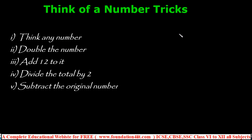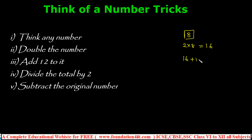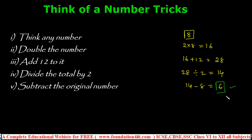Let's take an example. Think of any number — let's say 8. Double the number: 2 × 8 = 16. Add 12 to it: 16 + 12 = 28. Divide the total by 2: 28 ÷ 2 = 14. Subtract the original number: 14 − 8 = 6. You always get 6 in this case.